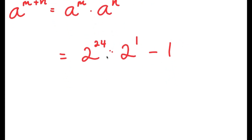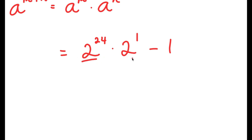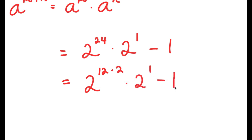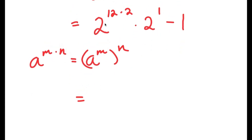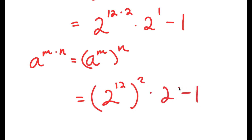Basically, our goal throughout this video is to change our values to be as small as possible, so that at the end we can do whatever we need to get our final result. So, 2 to the power of 24 — how do we simplify this further? I can rewrite this as 2 to the power of 12 times 2. Another property of exponents is that a to the power of m times n equals a to the power of m, to the power of n. So 2 to the power of 12 times 2 equals 2 to the power of 12, squared, times 2 minus 1.